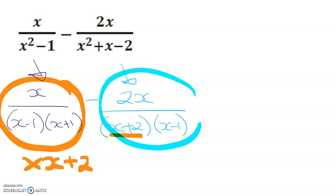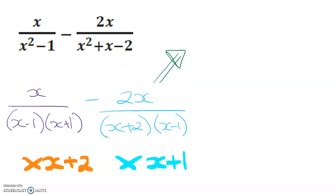On the right hand side, my denominator doesn't have the (x+1) in it. So I'm going to multiply this side by (x+1).